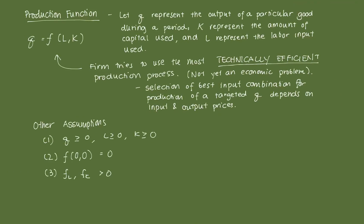The behavior of a firm and the way it transforms inputs into outputs is summarized mathematically by the production function. We let Q represent the output produced during a period, K be the amount of capital used, and L represent the amount of labor input used. The firm will try to use the most technically efficient production process — given whatever L and K it has, it will produce the most Q possible. More precisely, it selects the best input combination to achieve a targeted output level Q, which depends on the prices of labor and capital.